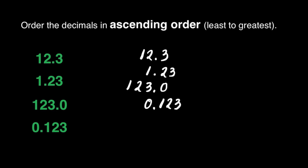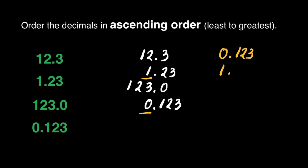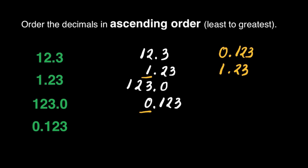Now let's compare the numbers in the whole number part. Which of these has the least value among the four? That's 0. That means 0.123 will be the first decimal we write. What is next? We have 1 in the whole number part, so the next is 1 and 23 hundredths. Then we compare 12 and 123 — we have 12 and 3 tenths next, and the last one will be 123.0.